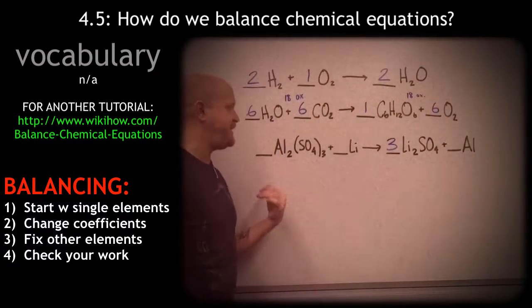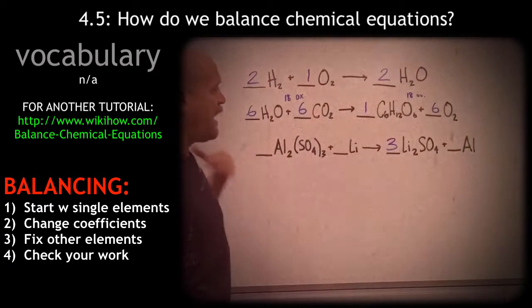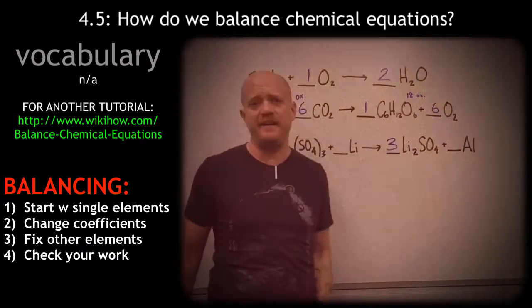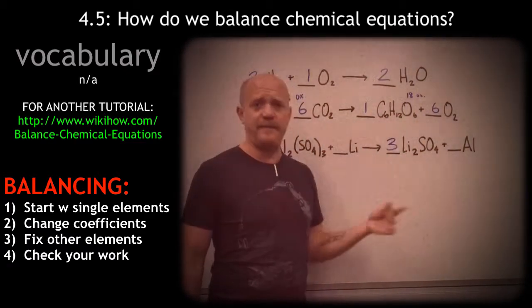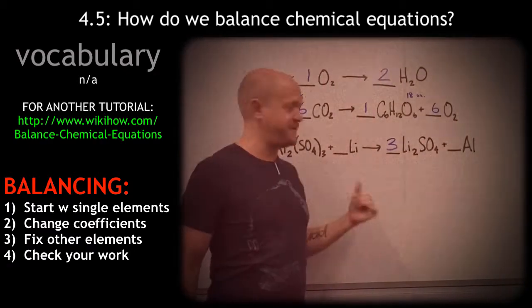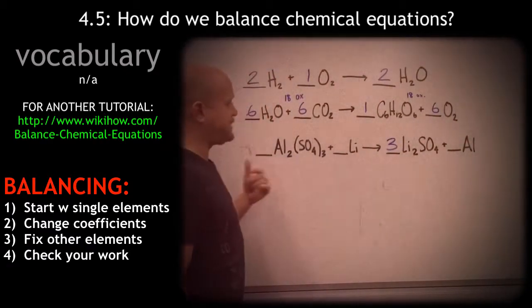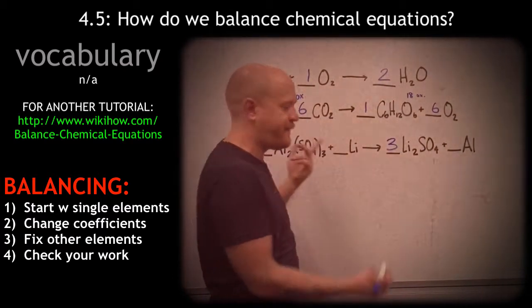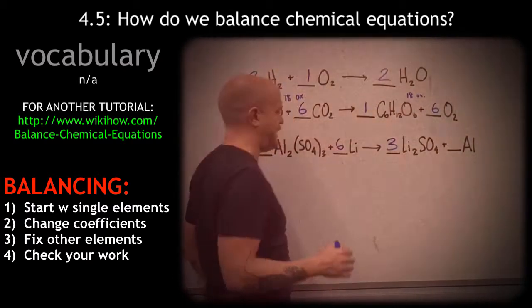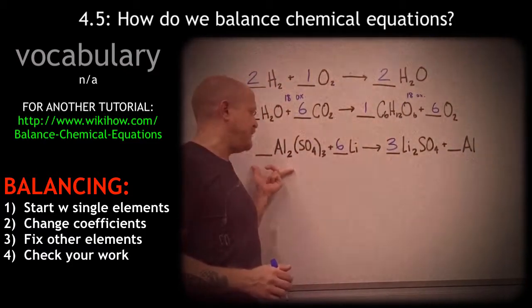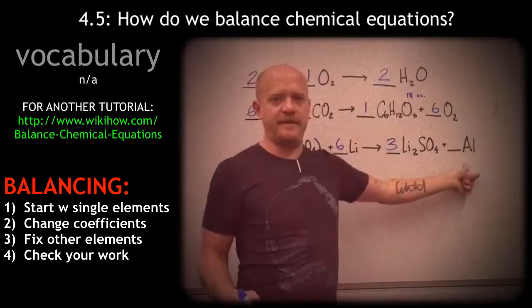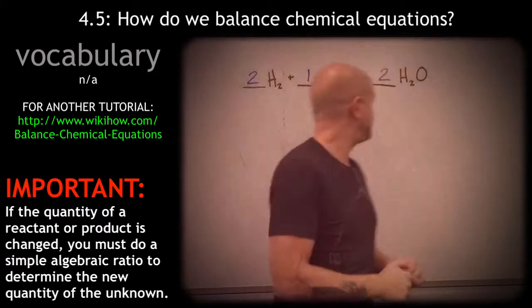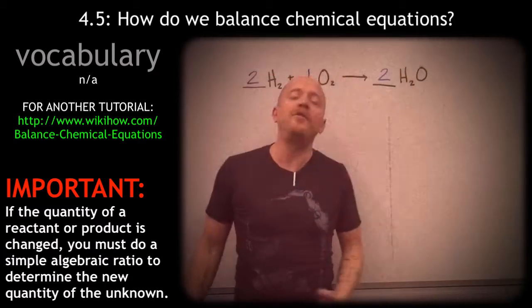One thing to mention: if you have an element by itself, save it for the end, because it's just one number you have to put in and you can worry about it after everything else is balanced. So now we have six lithiums on the left — since this is an element I can put a six there. On the other side I had two aluminums, which means over here I also need two aluminums.